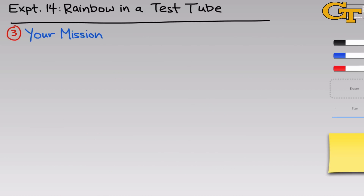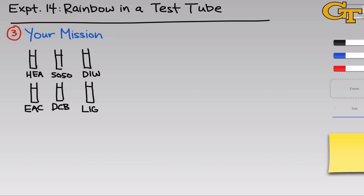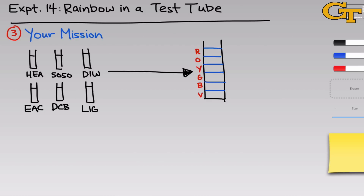Now let's discuss what your exact mission will be during the Rainbow Lab experiment. You'll start with six solutions with unknown codes, and the goal is to construct a layered mixture of these six solutions such that there are six independent layers sitting one on top of the other, colored with red, orange, yellow, green, blue, and violet dyes to form a rainbow.